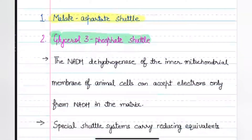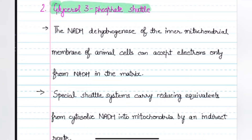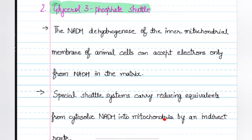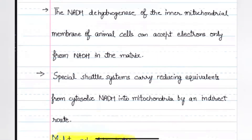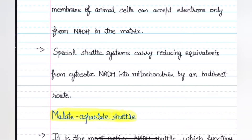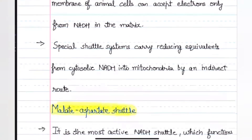There are two shuttle systems: the malate-aspartate shuttle and the glycerol-3-phosphate shuttle. The NADH dehydrogenase, which is part of the inner mitochondrial membrane of the electron transport chain in animal cells, can accept electrons from NADH in the matrix. Special shuttle systems carry reducing equivalents from cytosolic NADH into mitochondria by an indirect route.